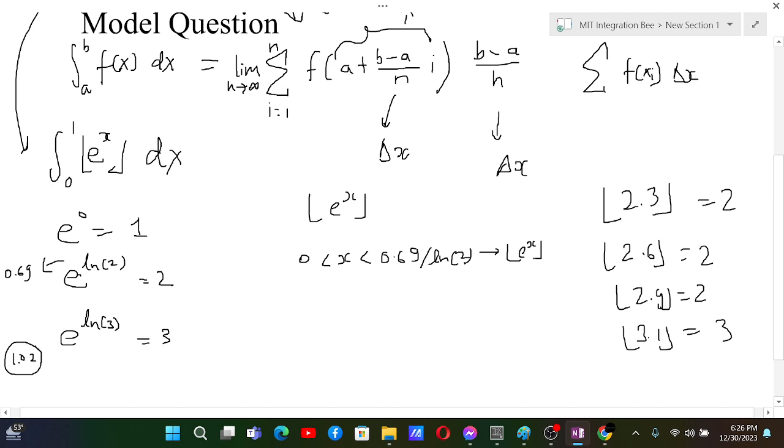going from 0 to 0.69, or let's say ln 2, at this point the GIF of e to the power x will be 1, because e to the power 0.68 will be something like 1.99, but the GIF will be 1. So in this range, the GIF will be 1.